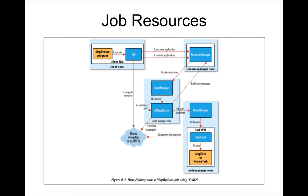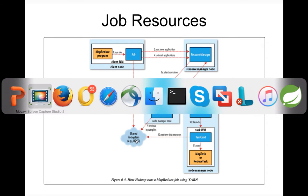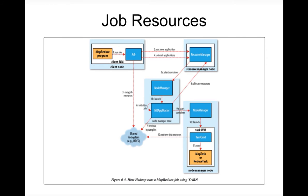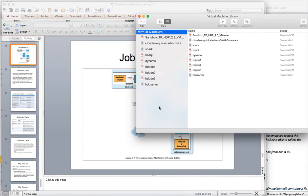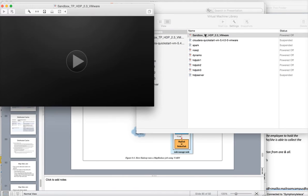So if map tasks or reducers start running, these resources are available locally or on nodes very close to where the processes are running. Whenever a map task or reduce task runs, as part of the initialization process it will copy all these resources into the in-memory of the map task JVM or the reduce task JVM, and then it will start executing the logic.